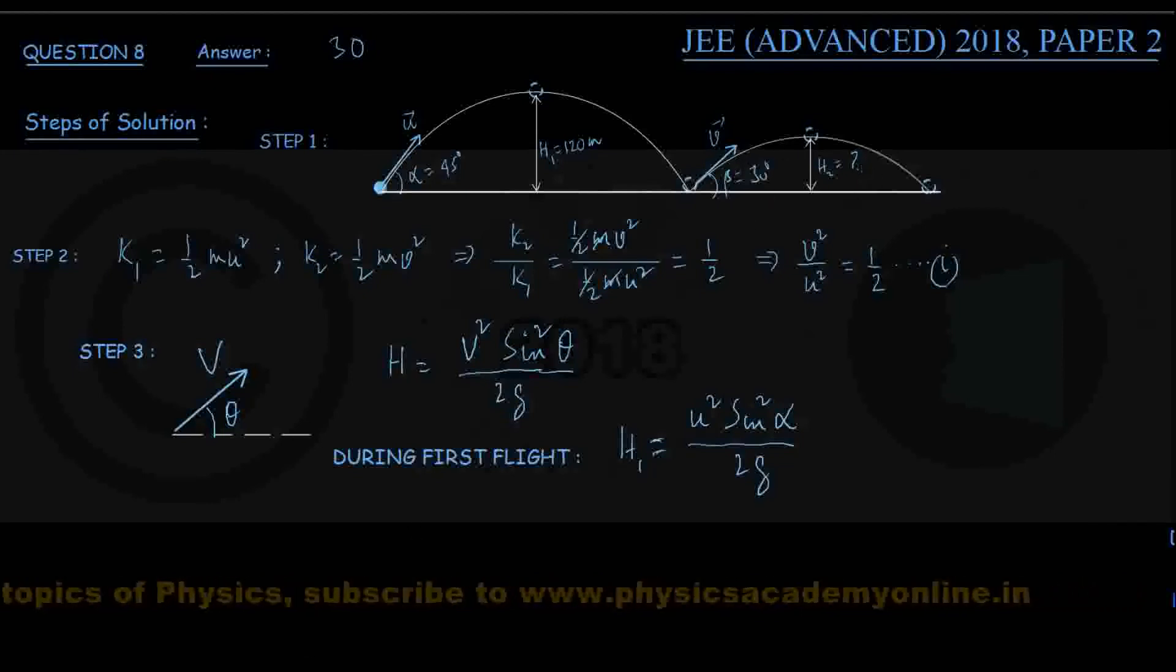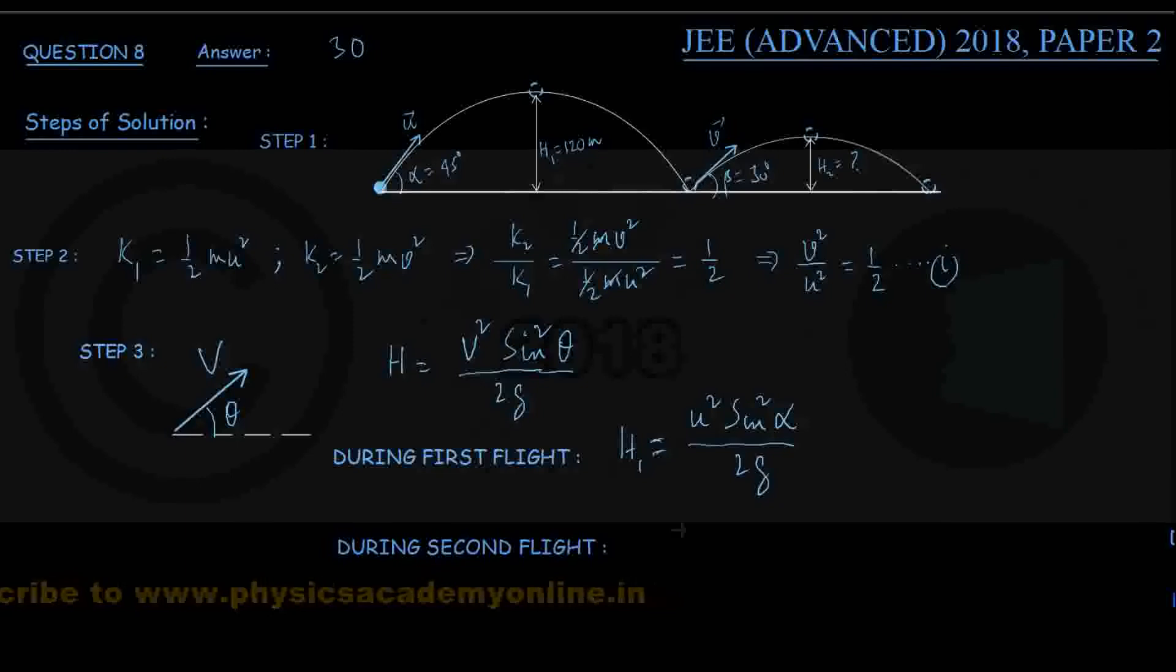And during the second flight after the bounce, maximum height reached is h2. That must be v squared into sin squared beta divided by twice g.